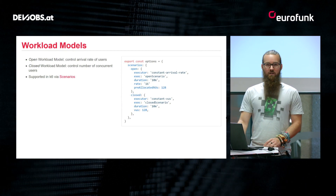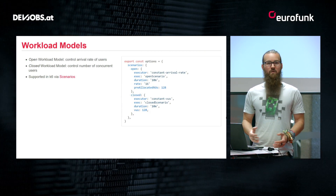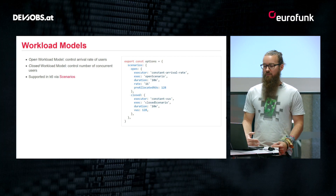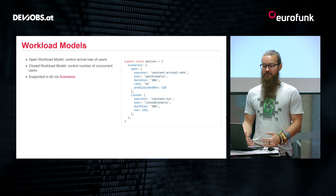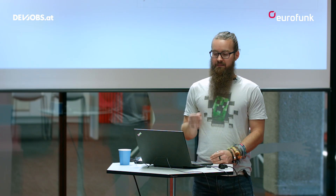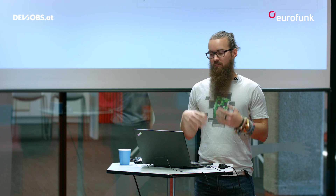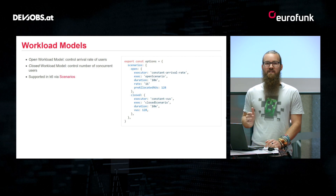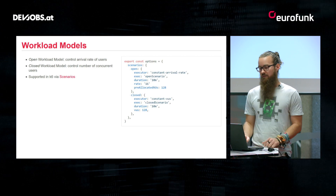You can define different workload models depending on your application needs. There are two models: the open workload model, where you control the arrival rate of new users, and the closed workload model, where you control the number of concurrent users interacting with your system. In K6 you define this with scenarios — for example, 16 users executing the default function in a loop, or 100 requests per second where K6 automatically starts up new virtual users to meet the required load.